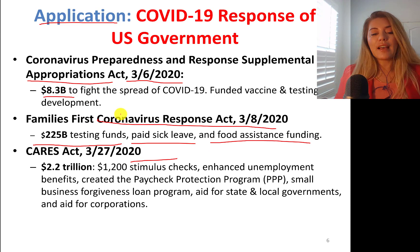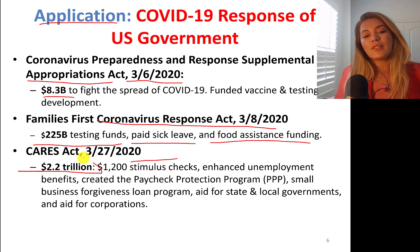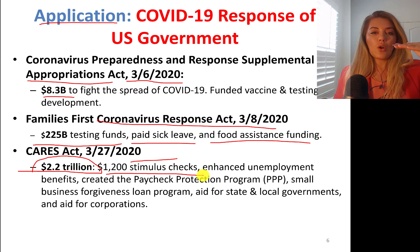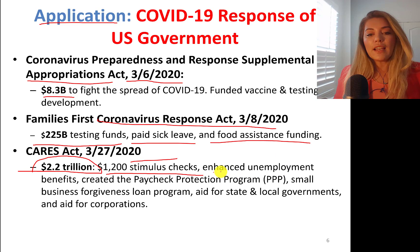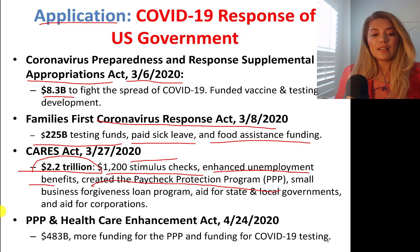Then came the CARES Act on March 27th — about the start and height of COVID. This was $2.2 trillion, about 10% of our GDP. Qualified people received $1,200 stimulus checks, up to certain earning levels. We also had enhanced unemployment benefits. The government created the Paycheck Protection Program — PPP loans — small business forgiveness loan programs, and aid for state and local governments, and aid for corporations.